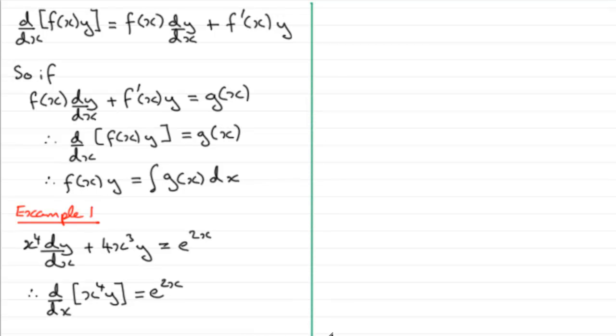Now if we integrate both sides with respect to x, then what we're going to have here on the left is just simply x⁴ multiplied by y. And that's going to equal the integral of e^(2x) integrated with respect to x. And so therefore what we have is x⁴y equals, and the integral of e^(2x) is ½e^(2x). And then we mustn't forget the constant of integration, plus c. Okay, well, that's how we go about solving that one.